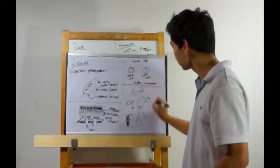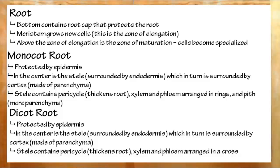And that's how materials actually get transported. To recap, the three major structures in plants are roots, stems, and leaves.